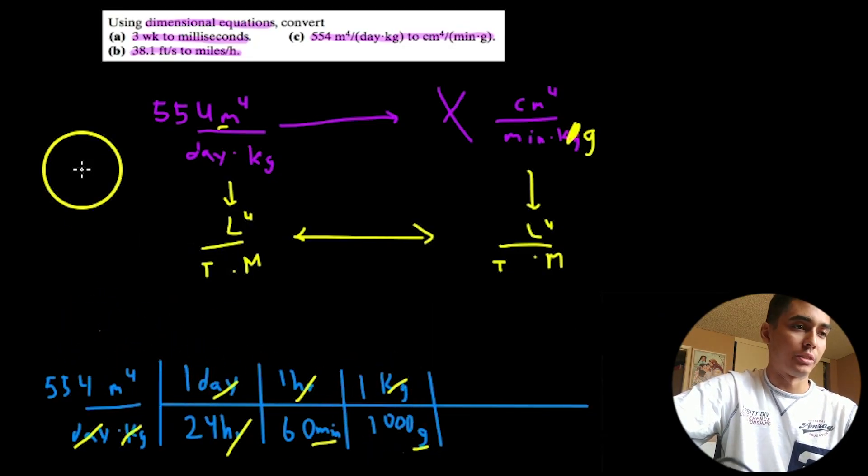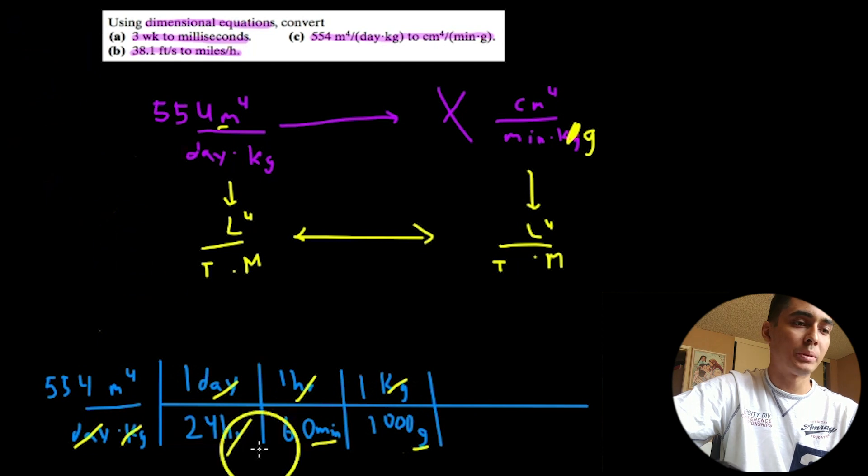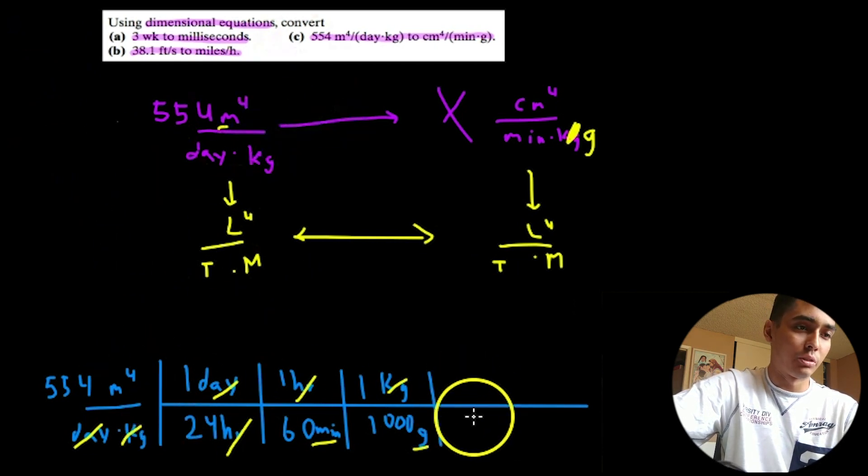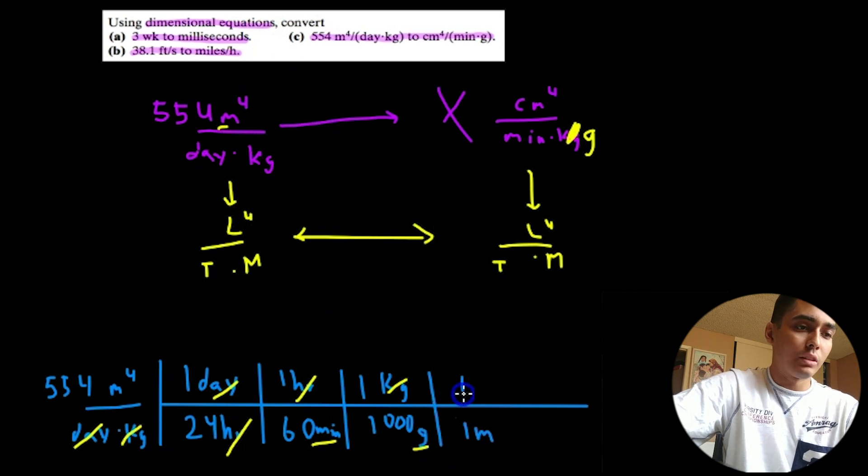So, meters to the fourth. This is tricky. This took me a very, very long time to understand. This is just because of math. But meters to the fourth, we have to convert it. So, first, let's do a conversion factor so we know that one meter is 100 centimeters, right? You're going to get a meter stick, it's 100 centimeters.